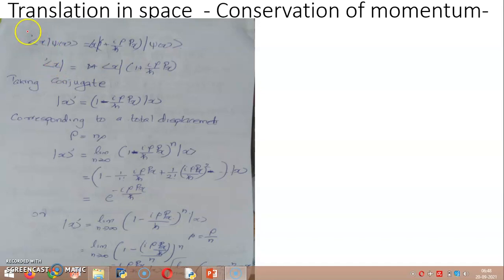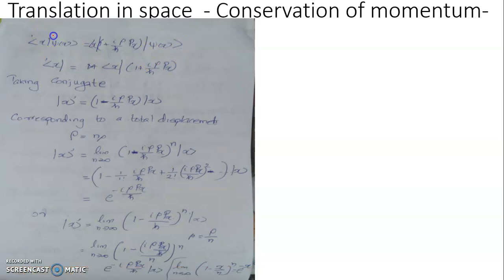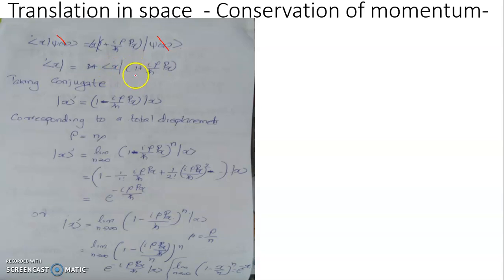That is, scalar product x' ψ(x) equals scalar product x, the operator (1 + iρp_x/ħ) ψ(x). So the ψ(x) in the ket space can be equated on both sides, and we obtain the position coordinate in the adjoined ket space as adjoined ket x' equal to adjoined ket x times (1 + iρp_x/ħ).